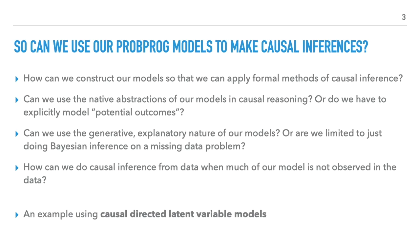So can we use our probabilistic programming models to make causal inferences? How can we construct our models so that we can apply formal methods from causal inference? Can we use the native abstractions of our models in causal reasoning? Or do we have to explicitly model potential outcomes? Can we use the generative explanatory nature of our models? Or are we limited to doing Bayesian inference on potential outcomes as if it were a missing data problem?